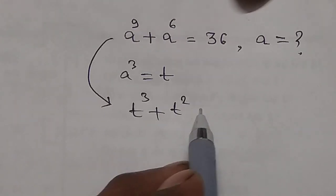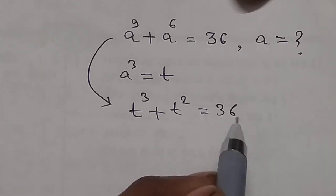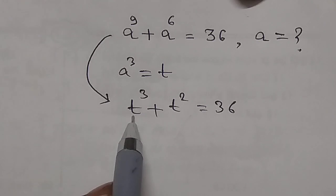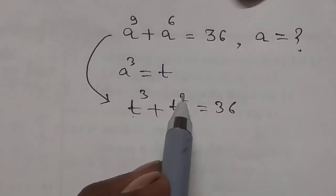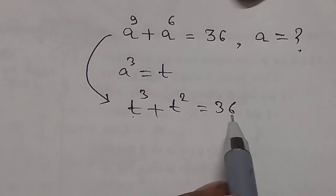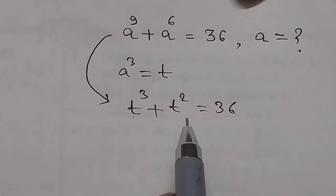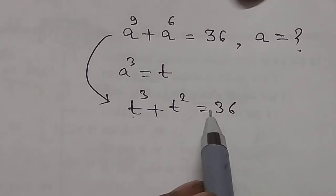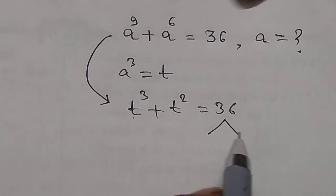t raised to 2 equals 36. Here we have a perfect cube number and perfect square number. Split 36 into two numbers whose sum is 36, one is a perfect cube number and another is a perfect square number. So 36